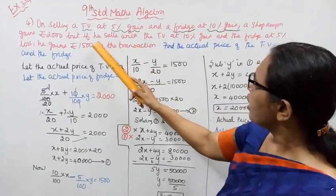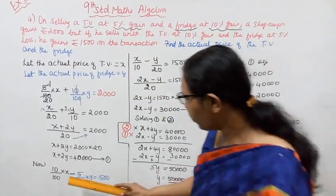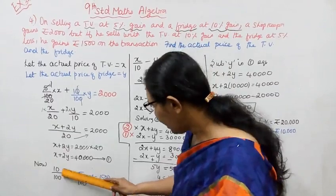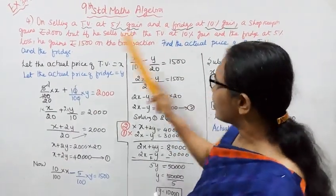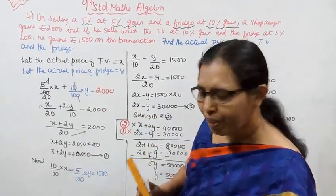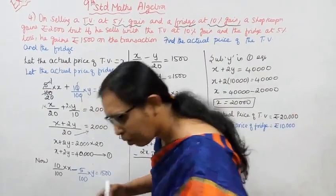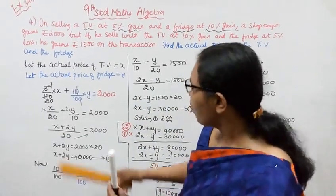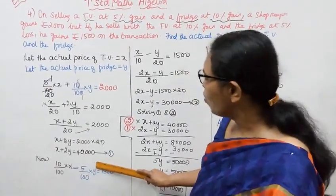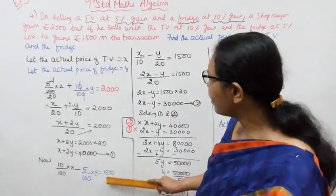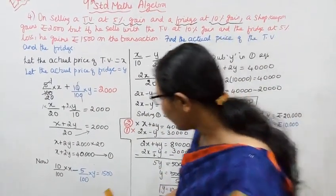For the second transaction: if he sells TV at 10% gain — 10 by 100 into X — and fridge at 5% loss — minus 5 by 100 into Y — he gains Rs. 1500.